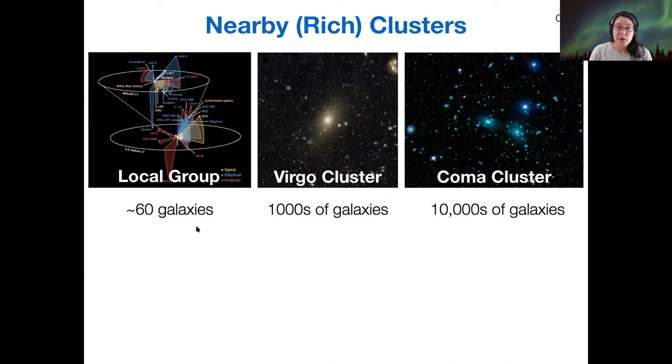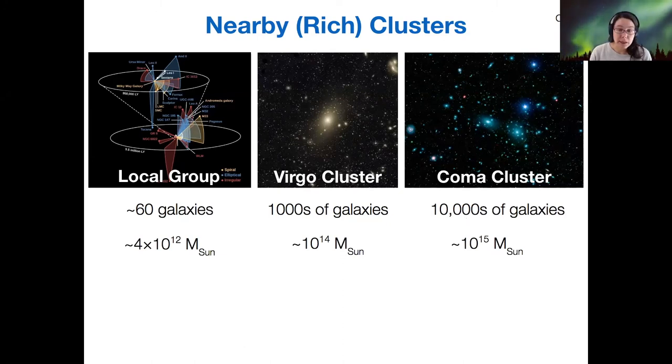Our local group is small—that's why it's called a group instead of a cluster. There are only about 60 galaxies, but Virgo nearby has thousands of galaxies, and the Coma cluster has 10,000.